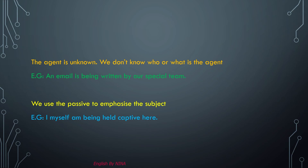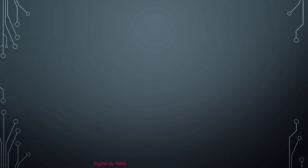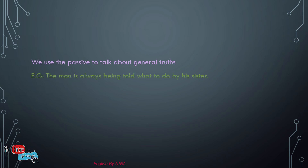For example: 'I myself am being held captive here.' We also use the passive to talk about general truths — for example: 'The man is always being told what to do by his sister.' Here 'the man' is our object, 'is' is our to-be verb, 'being told' is the past participle of 'tell' (tell–told–told), and 'by his sister' introduces the subject.